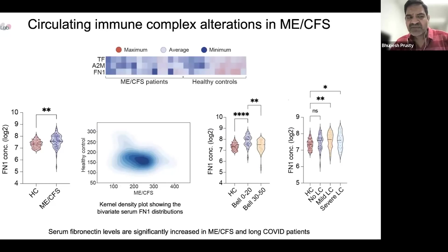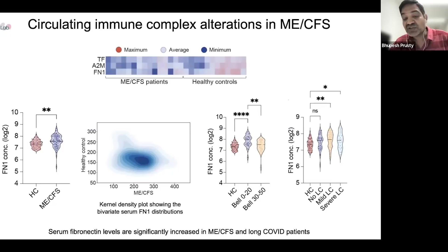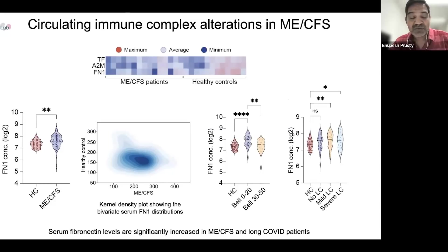Fibronectin normally is not the bad guy. Fibronectin helps in tissue injury, but if the fibronectin amounts go too high or too low on both sides, it can cause tissue injury as well as interfere in the blood coagulation process. And when fibrin meets fibronectin, that's the bad part of the whole story.